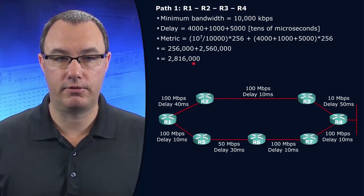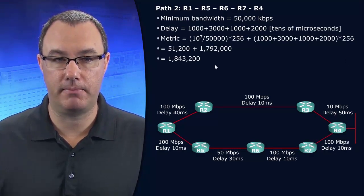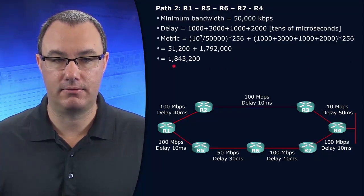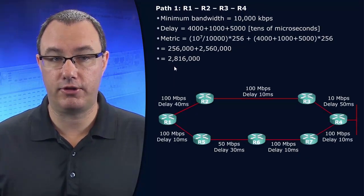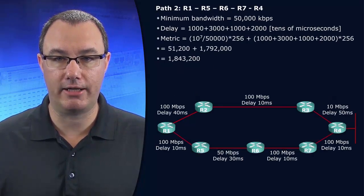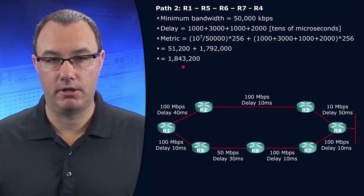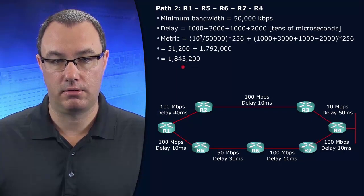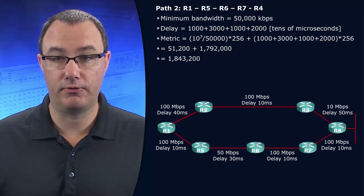If we were to look at the bottom pathway, instead of a metric of 2.8 million, it has a metric of 1.8 million. So the top pathway is 2.8, and the bottom pathway is 1.8. That's a pretty big deal — it has a far smaller metric, and as a result, it is the preferred path.